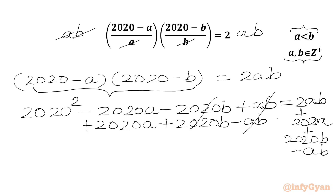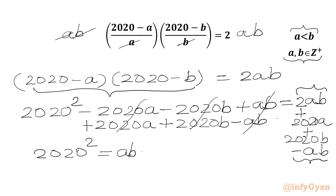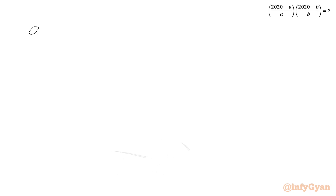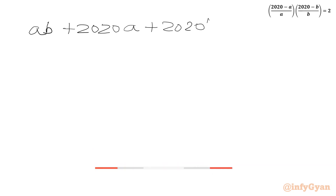From the LHS we cancel those three terms, leaving 2020 squared. On the RHS we write ab plus 2020a plus 2020b equal to 2020 squared. Now we are going to use Simon's Favourite Factoring Trick, SFFT, and add 2020 squared to both sides.